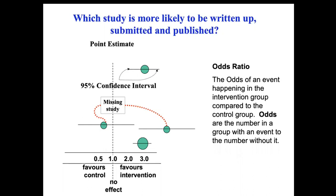Which of these two studies is likely to be missing from the literature search? Esther says a negative study is likely to be missing. That is presumably because it is negative — perhaps the authors are less motivated to write it up or to submit it, and editors are less likely to recommend it for publication.